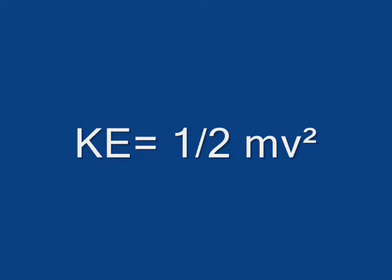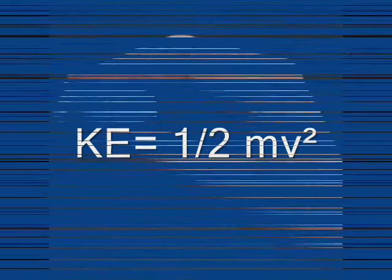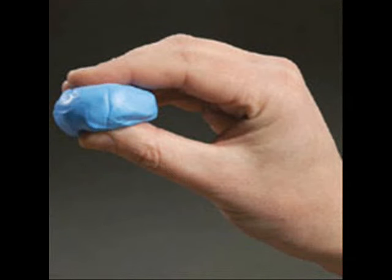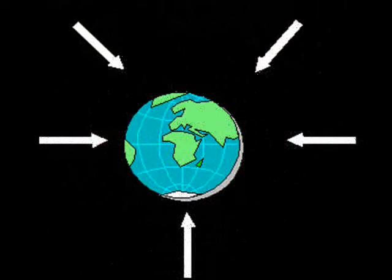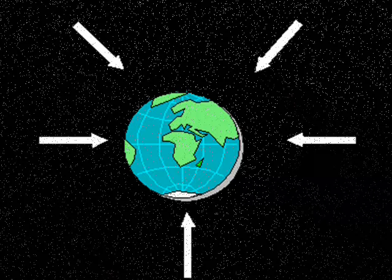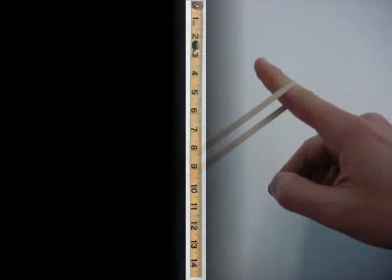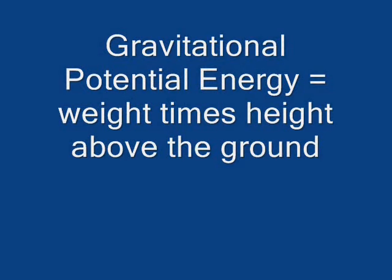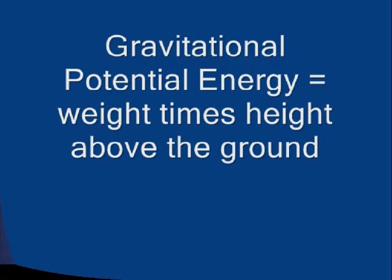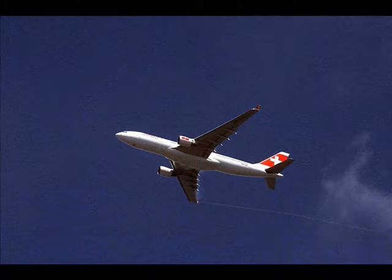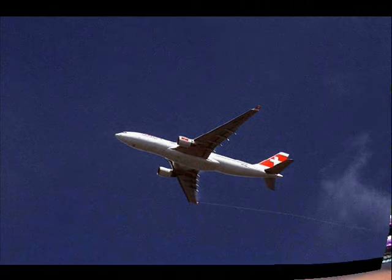The formula for kinetic energy is one half mass times the speed squared. Potential energy is the stored energy that results from the position or shape of an object. The two types of potential energy are gravitational potential energy and elastic potential energy. Gravitational potential energy is related to an object's height above the ground. The formula for gravitational potential energy is the object's weight times its height above the ground. So the higher something is above the ground, the more stored potential energy it has.